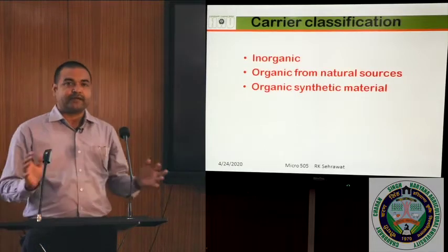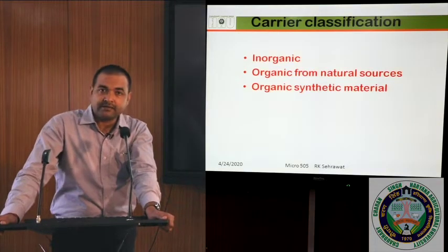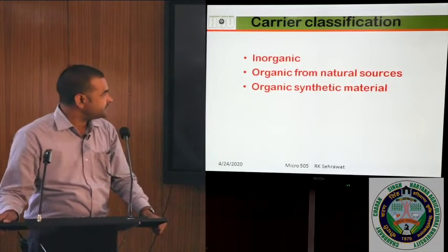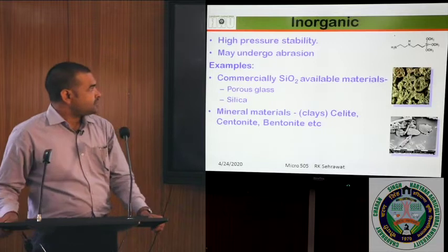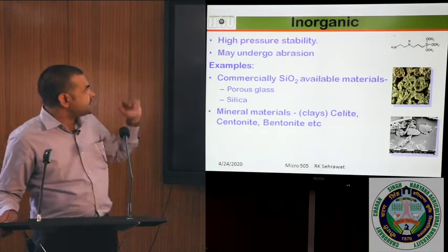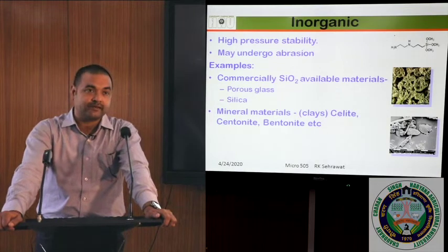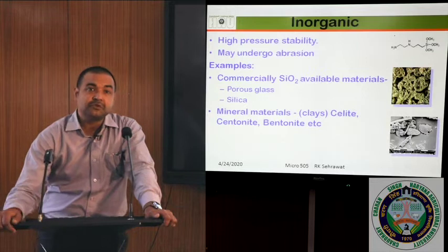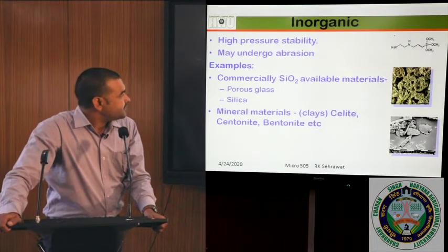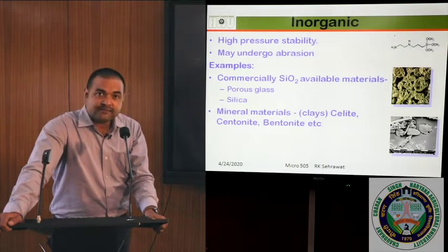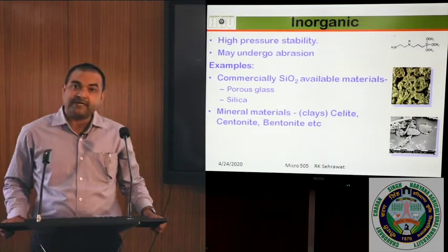Carrier classification: whatever carrier we are choosing is classified according to its chemical or physical properties. The very first is inorganic material, which can be used as a carrier for enzyme immobilization. Then organic from natural sources and organic synthetic material. Inorganic carrier materials have high pressure stability, but they may undergo abrasion and lead to some undesired properties. Examples are commercially available silicon dioxide including porous glass, silica, mineral materials including clays, celite (also called diatomosaur), centenite, bentonite, etc.